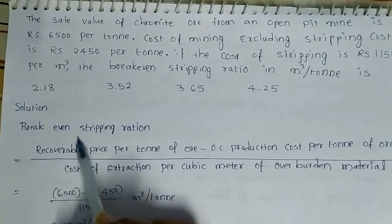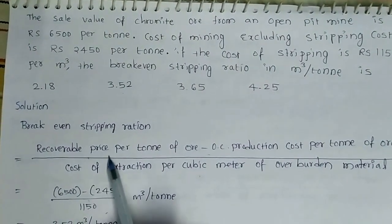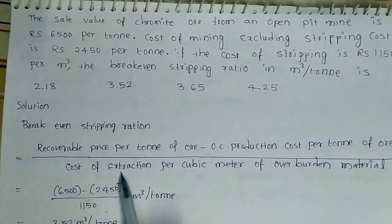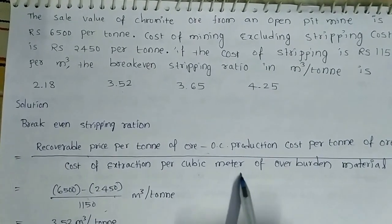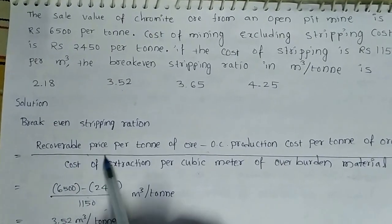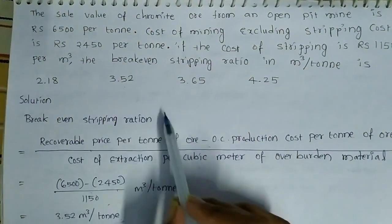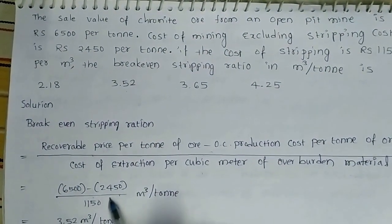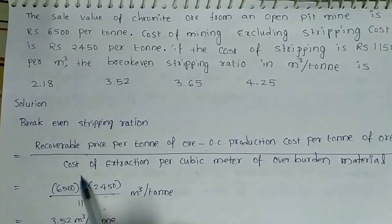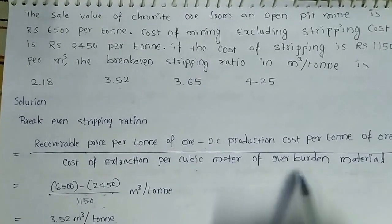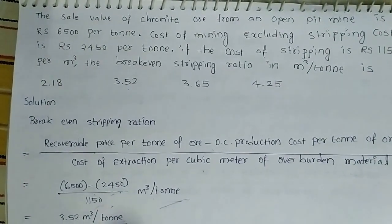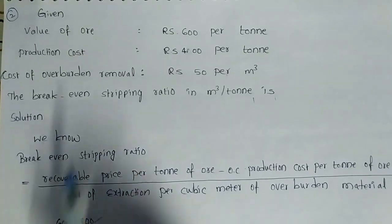The solution: the breakeven stripping ratio equals the recoverable price per ton of ore minus the OC production cost per ton of ore, divided by the cost of extraction per cubic meter of overburden material. So here, 6500 is the recoverable price per ton of ore, subtracted with 2450 as the OC production cost per ton of ore, divided by 1150 as the cost of extraction per cubic meter of overburden. Finally we get 3.52 cubic meters per ton.